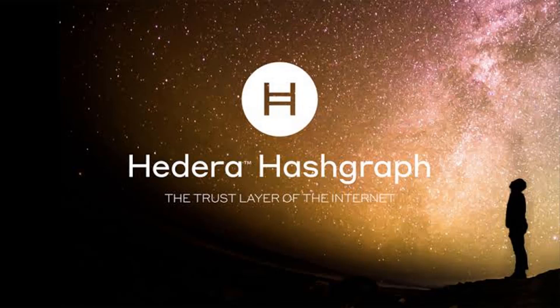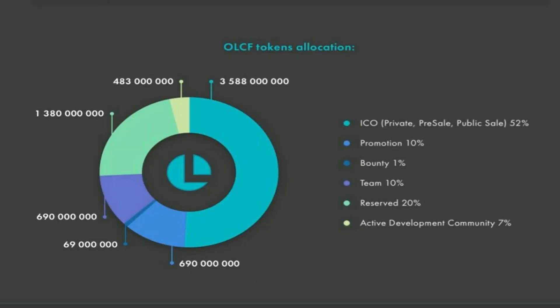The token details of the All Portal platform will be made available ahead of the IEO, which is expected to be listed on OKEx, Coinbase, or any of these reputable crypto exchanges. For the token allocation, 52% of total tokens goes to the IEO or ICO.